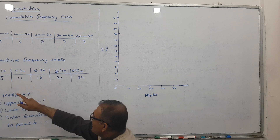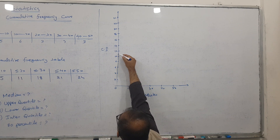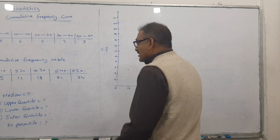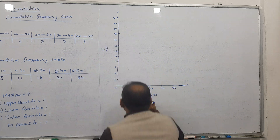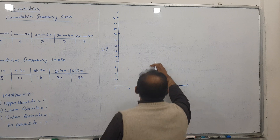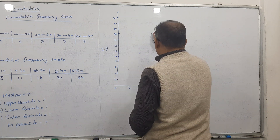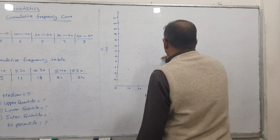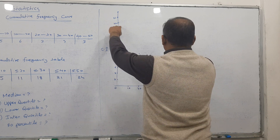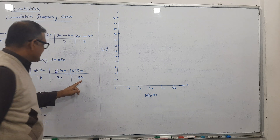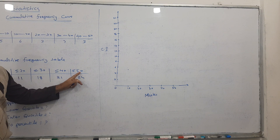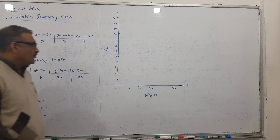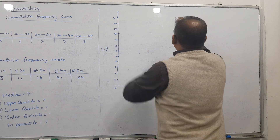Second point: 20 and 11 — 20 is here, 11 is here, so I get a point somewhere in the middle. Third point: 30 and 18 — 30 is here, go up to 18, mark the point. Next: 40 and 21. Last point: 50 along the x-axis and 24 along the y-axis — mark the point.